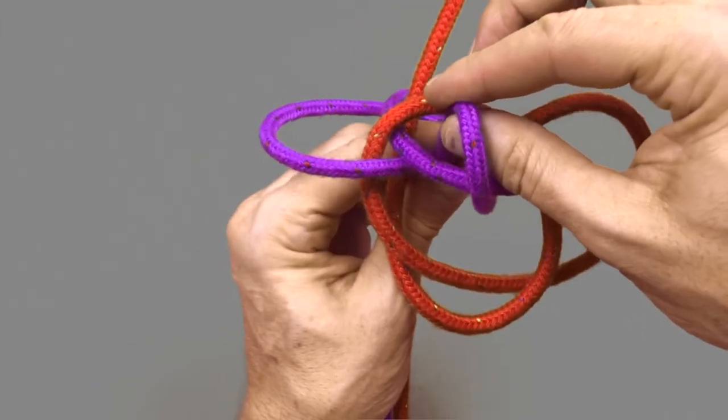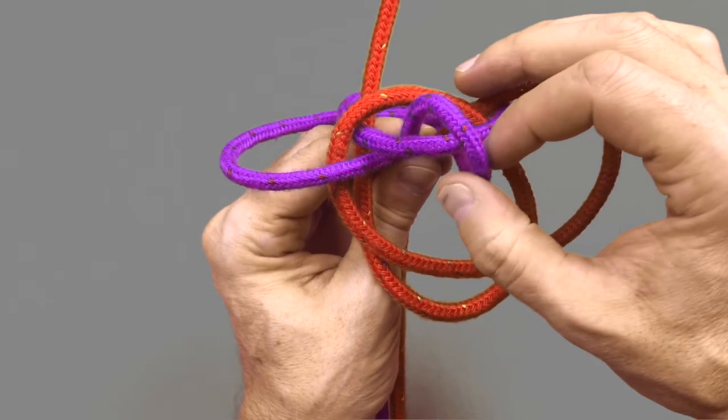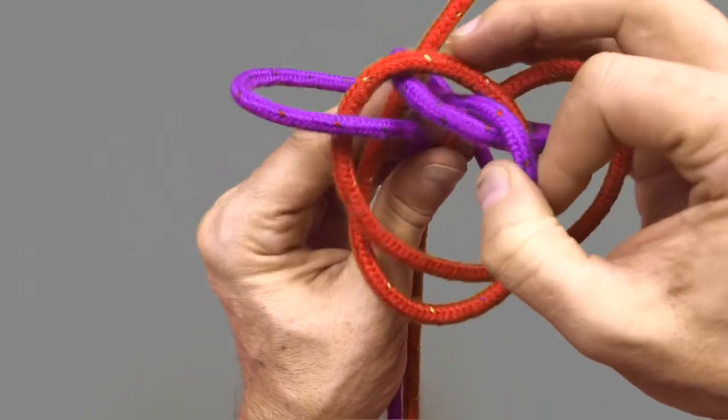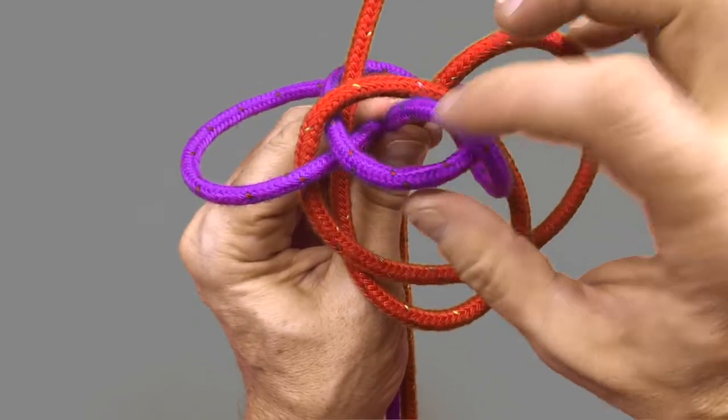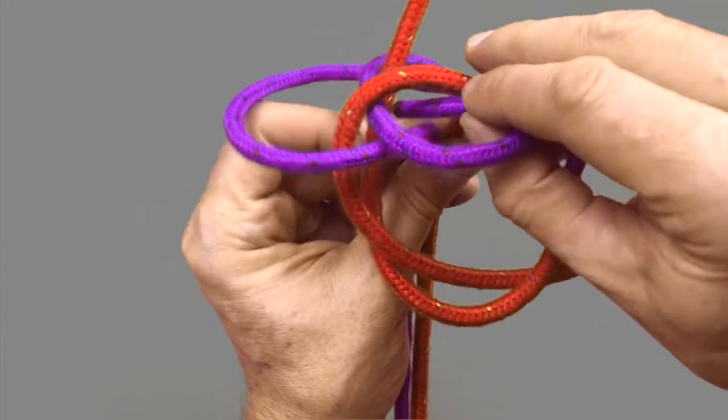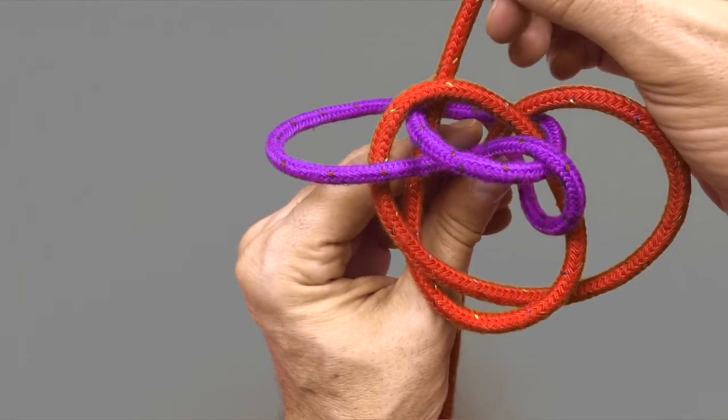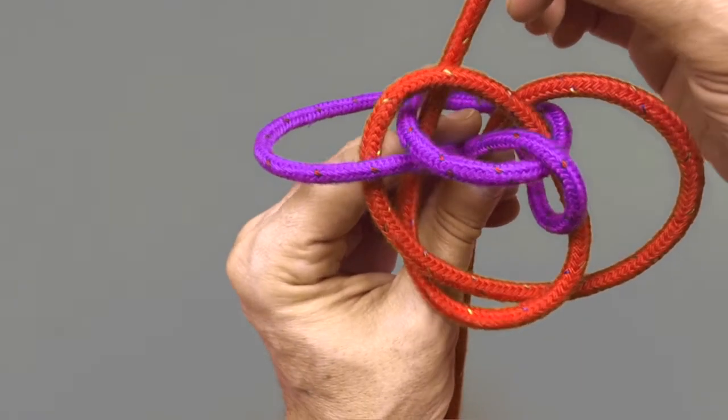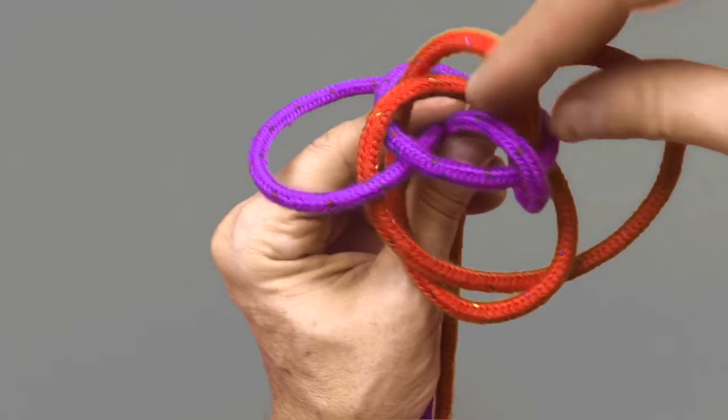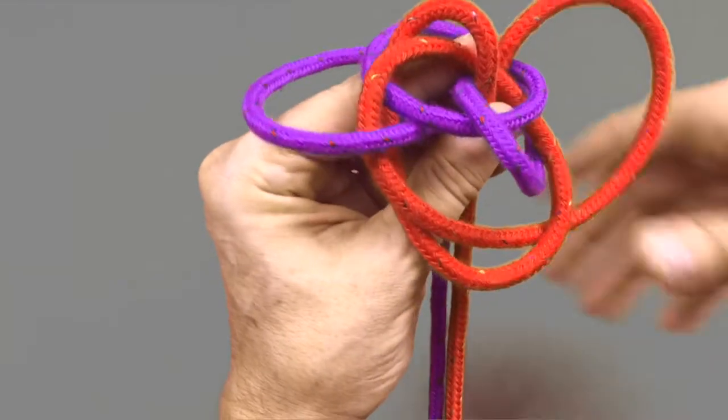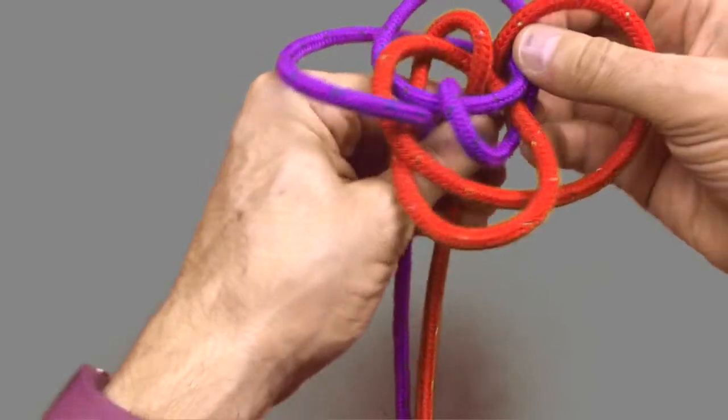So take the purple one, we take it up over the top and then down and then pinch it parallel with the purple tail below. Then you want to grab the red tail, taking it up over the top, down the center, and then once again pulling it parallel to the red tail below.